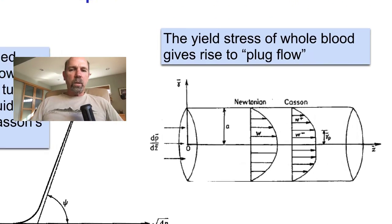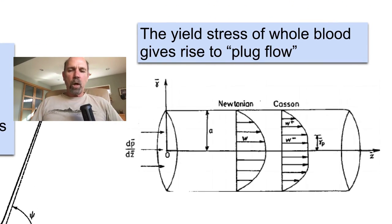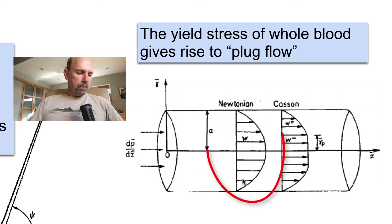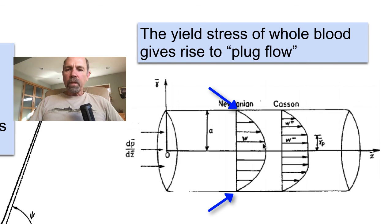Another consequence of the Casson fluid-like property of whole blood is the appearance of what is known as plug flow in blood vessels. We will learn later that for tube flow, the velocity profile is a parabola. Now, we know that the shear rate is the gradient of the velocity, which means that the shear rate will be zero at the center of the flow and maximum at the walls.